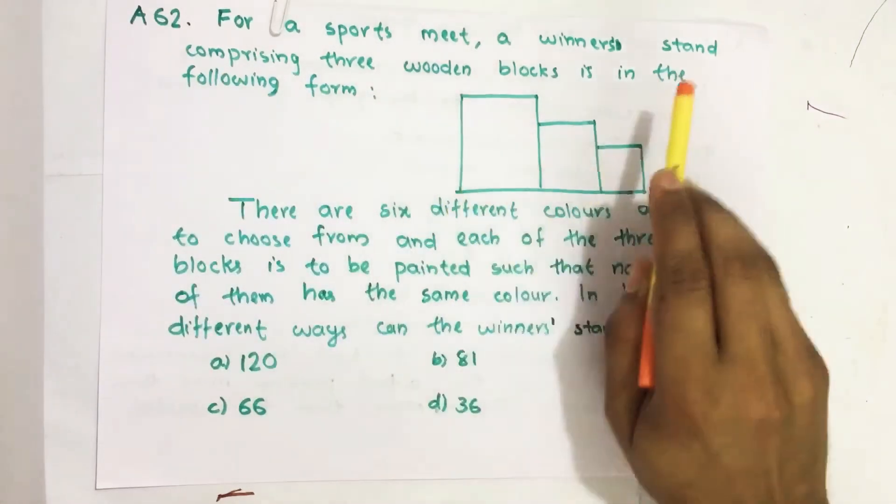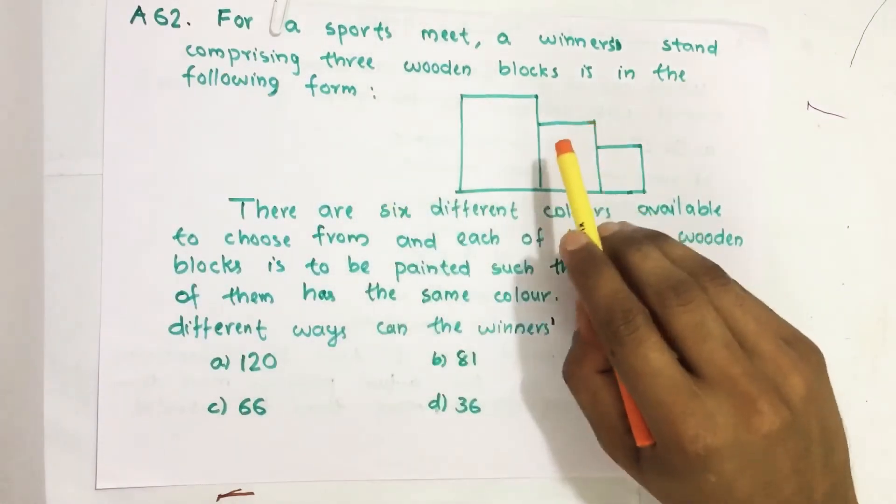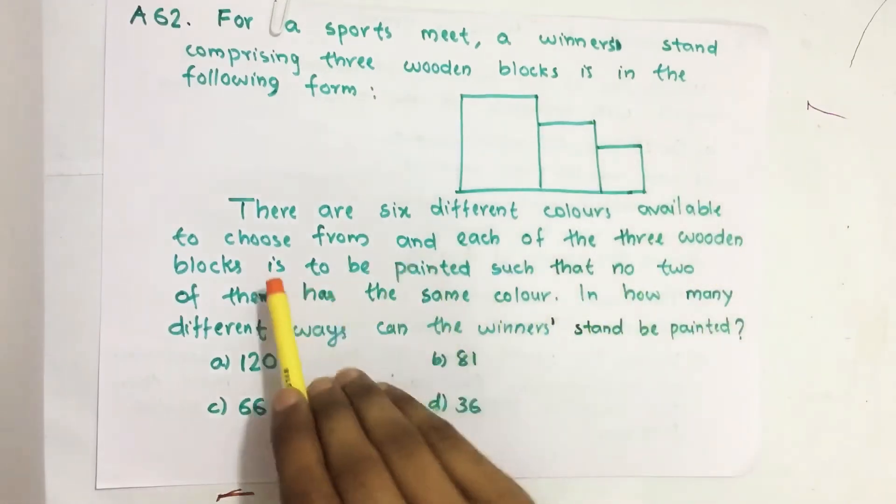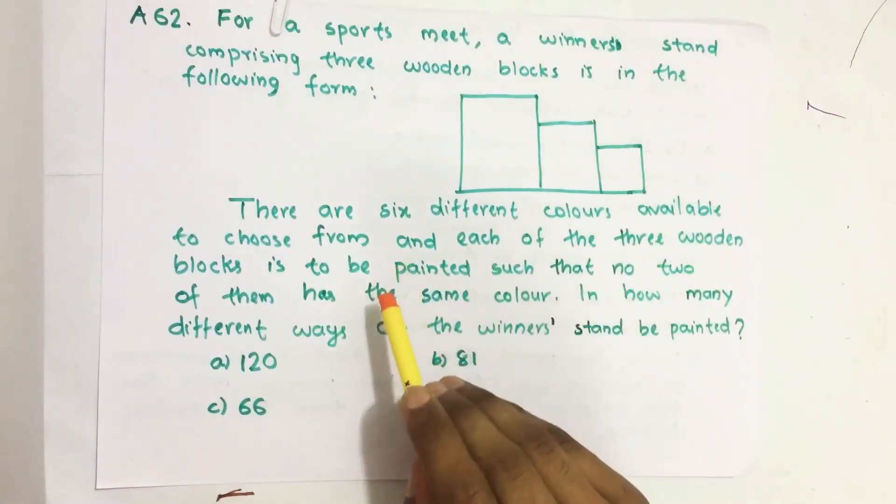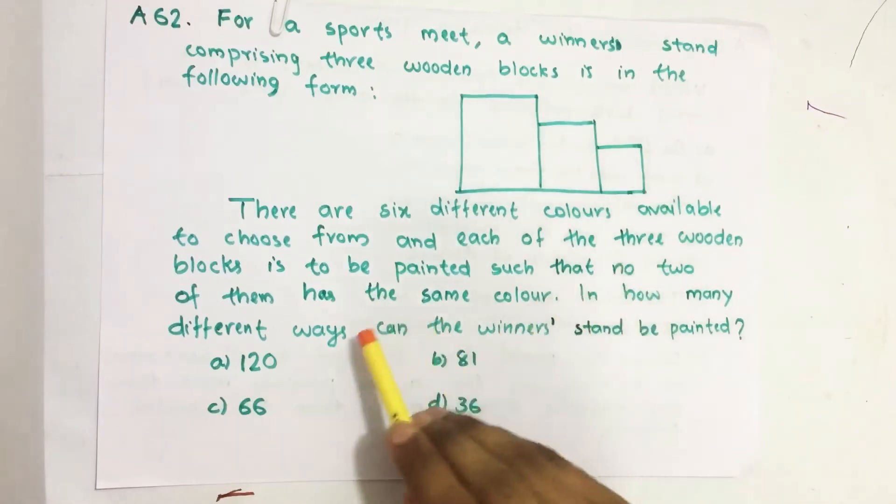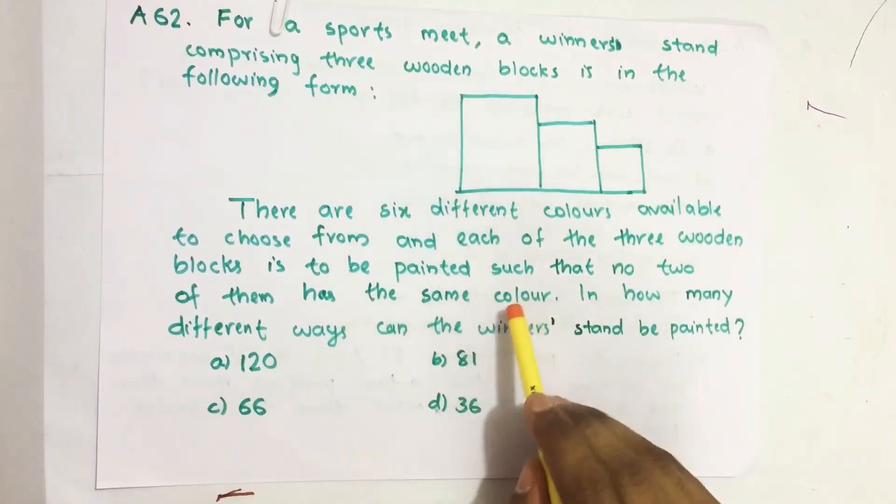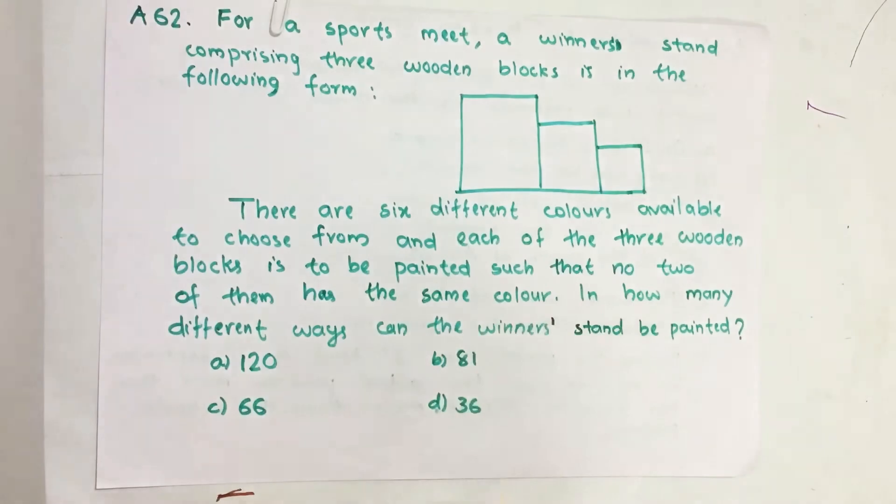For a sports meet, a winner stand comprising three wooden blocks is in the following form. There are six different colors available to choose from and each of the three wooden blocks is to be painted such that no two of them has the same color. In how many different ways can the winner stand be painted?